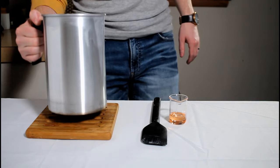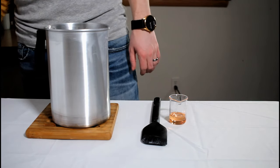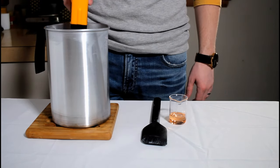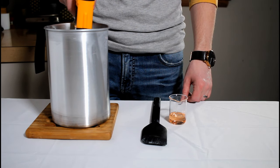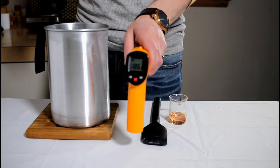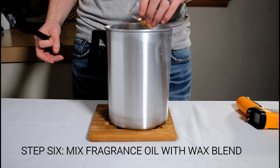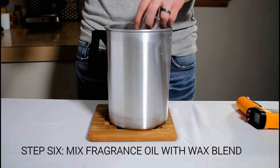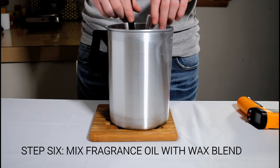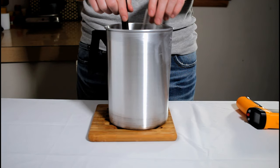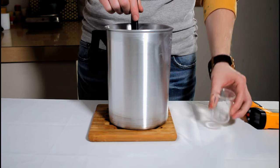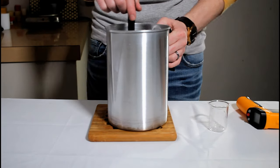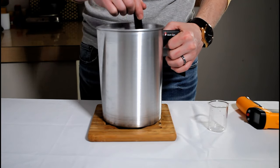With our wax at a target range of 185 to 195 degrees, we're going to take it off the heat, take a final measurement just to make sure we're still there. And 186 degrees is exactly where we want to be. So I'm going to take all 16 grams of the manicure smelling oil and put it into the wax blend. I'm going to get every drop possible because fragrance oil is the most expensive part of most candles by weight.